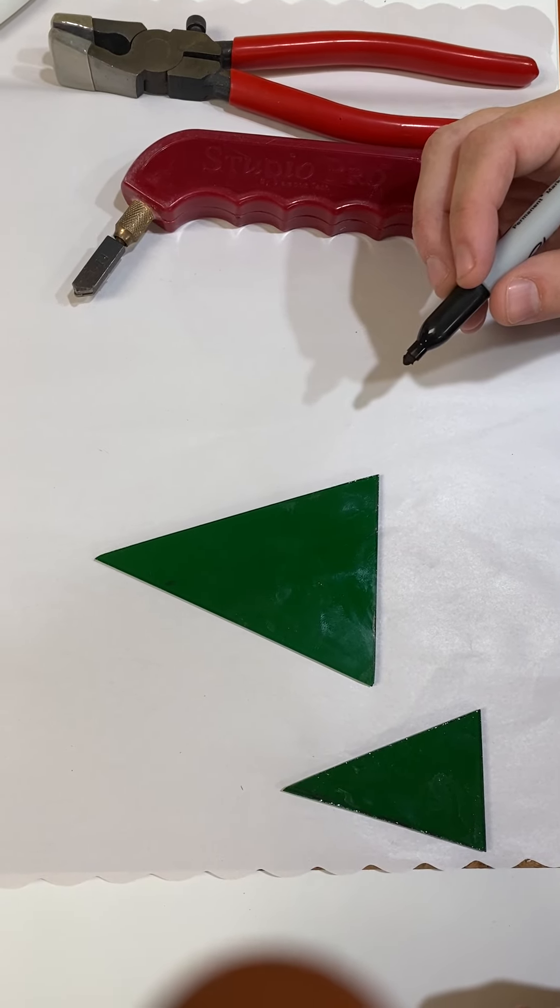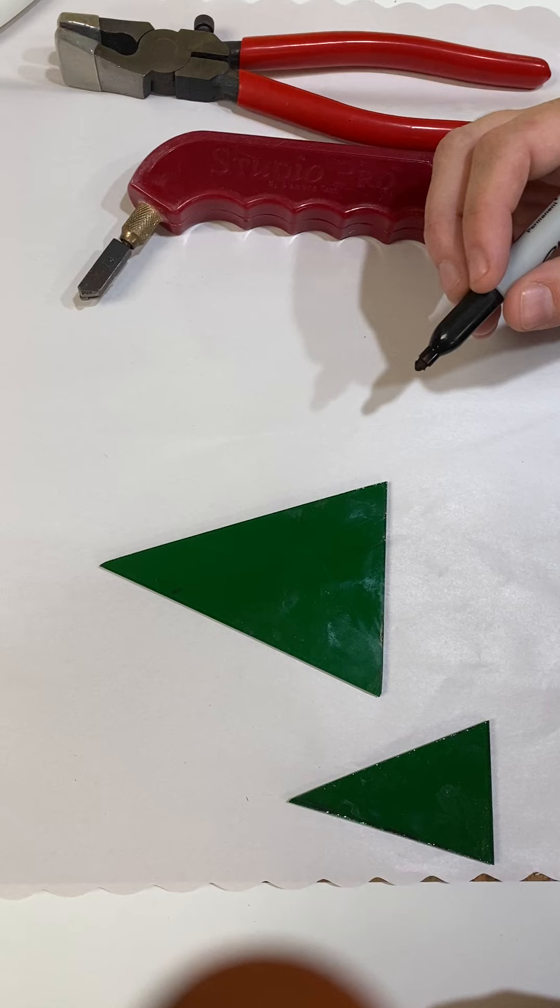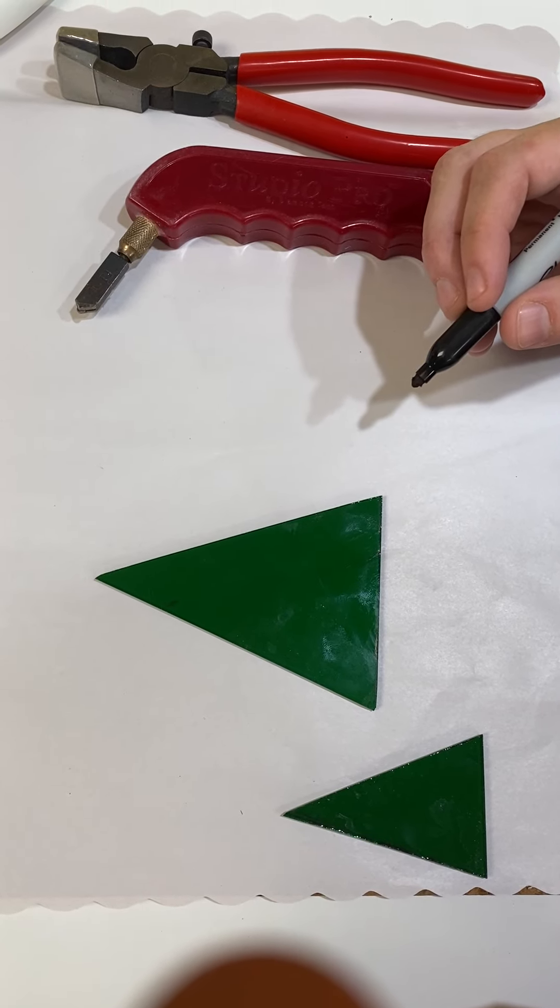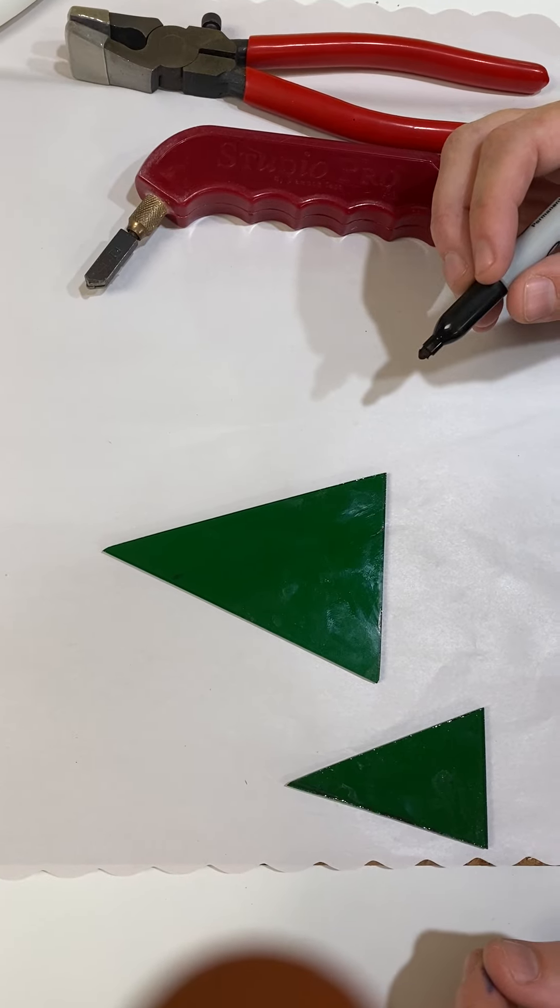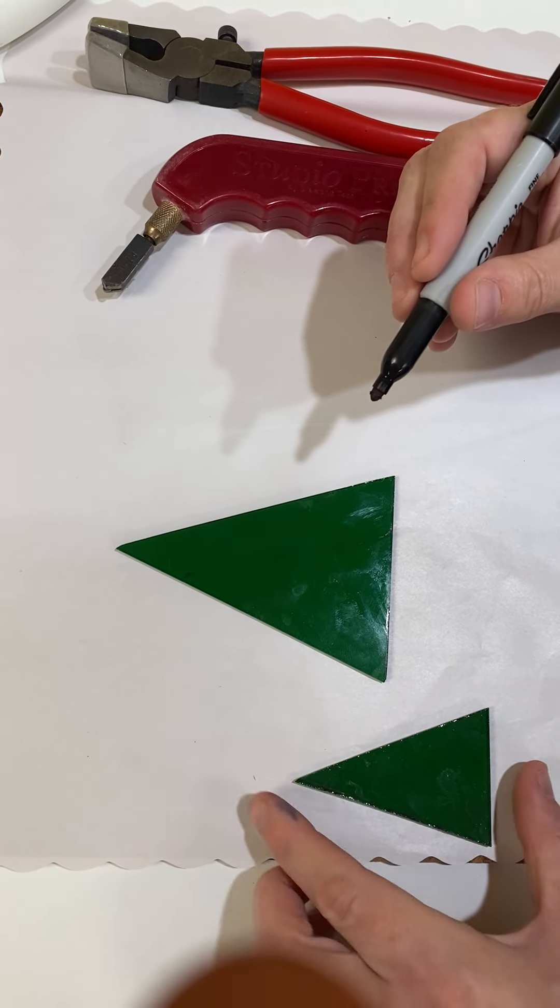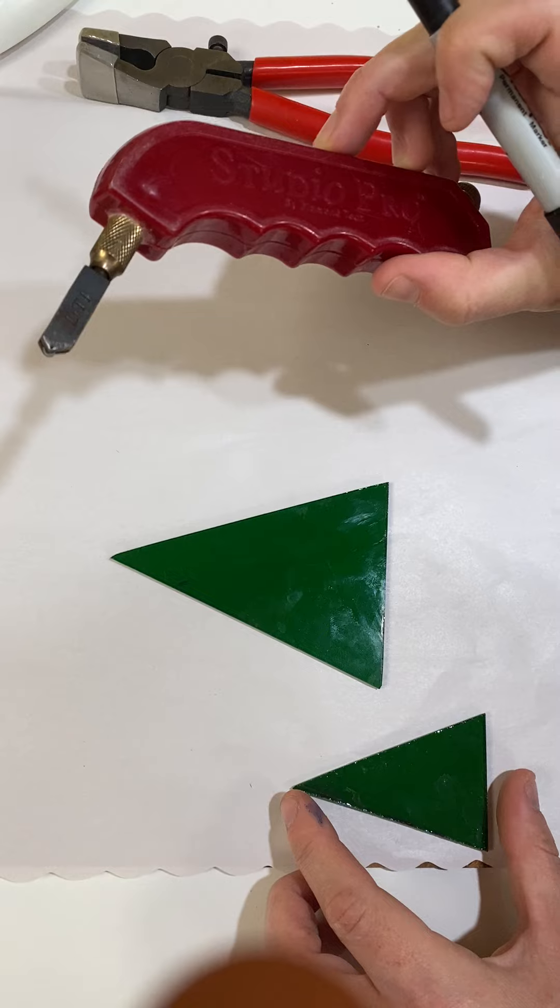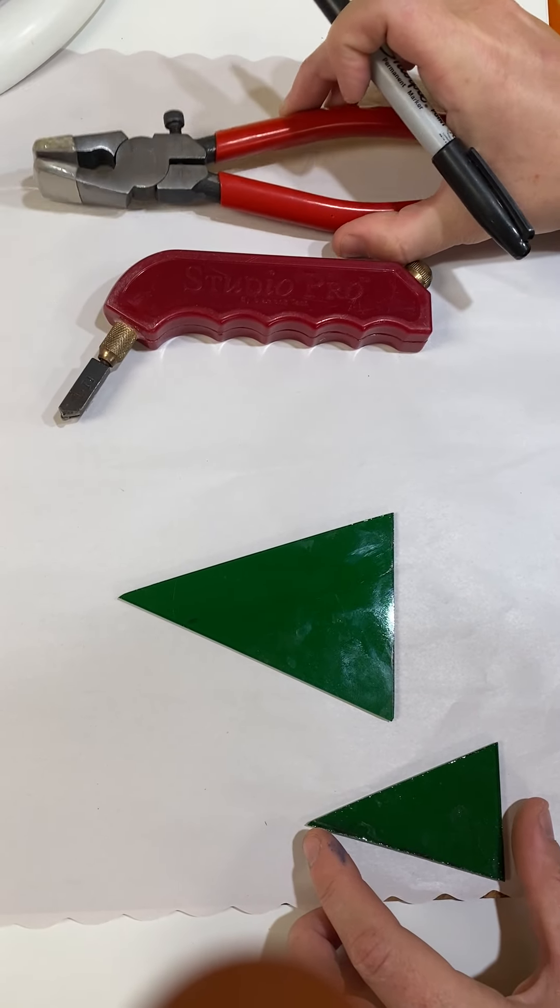Getting set up to do some cutting. What we're going to do for this one is take the larger triangle and resize it to make it the size of the smaller one. We've got our Sharpie, our scoring tool, and our grocer pliers.